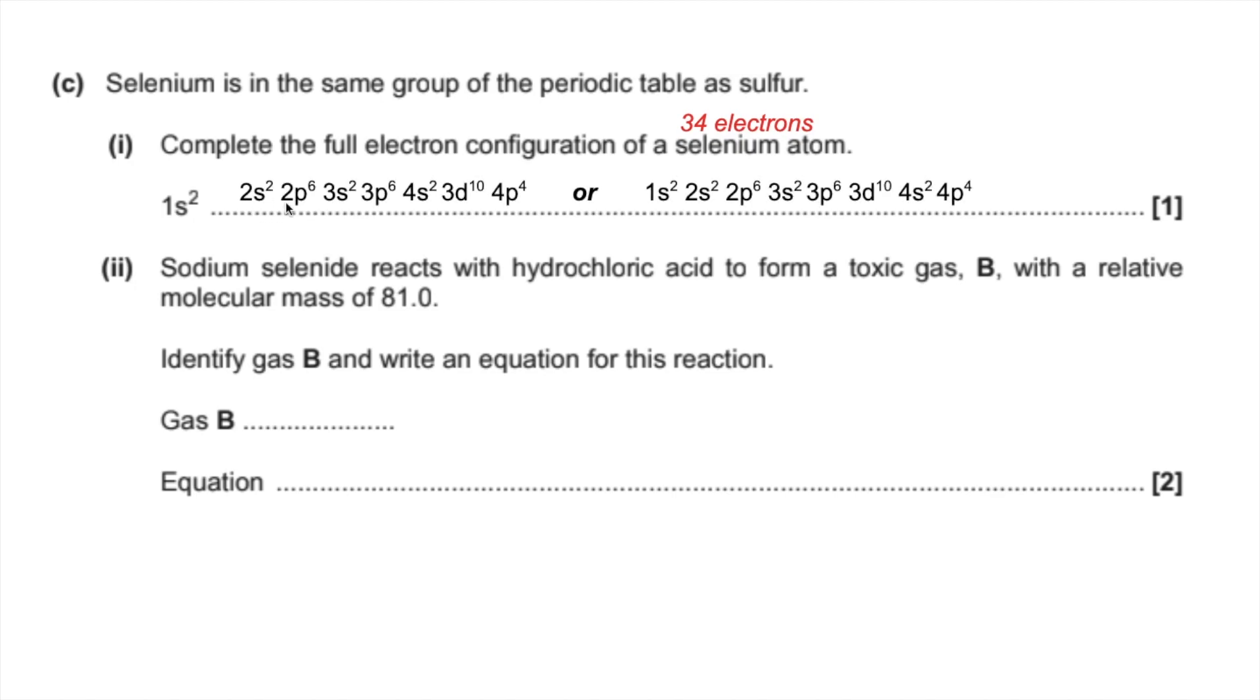Two ways to show it, you can either do it this way, which is the order of subshell filling. So you can see 3p6, then 4s2, then 3d10, and obviously finishes off 4p4. Or you could do it this way, which just groups all the subshells together in terms of which energy levels they're in. So either way here is fine.